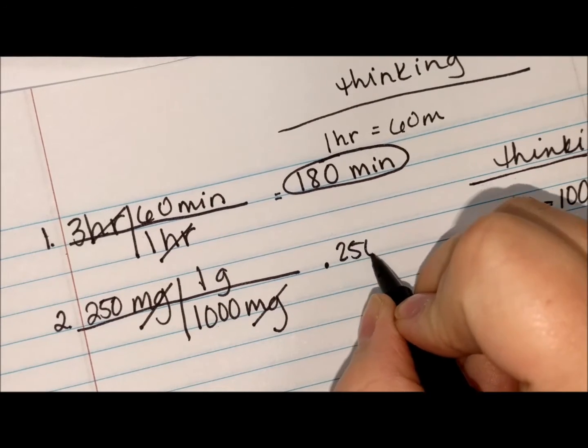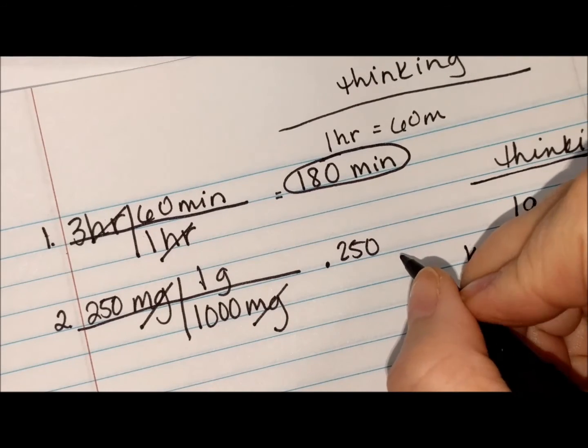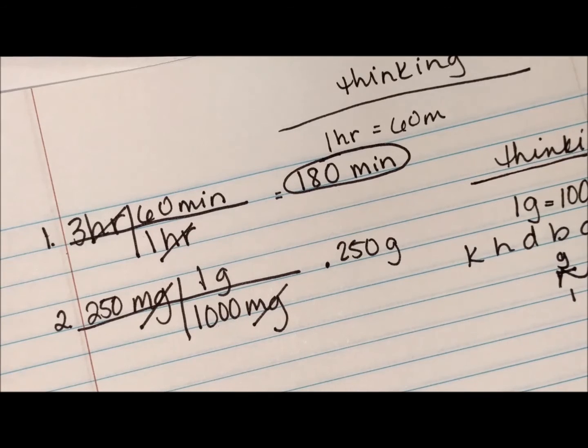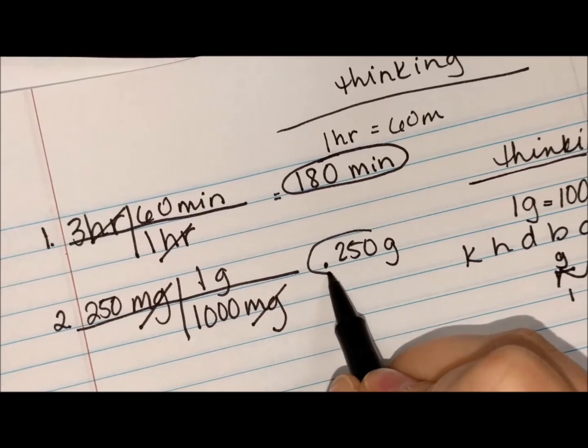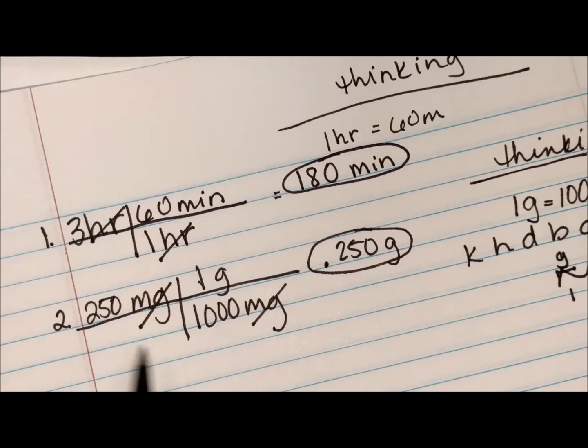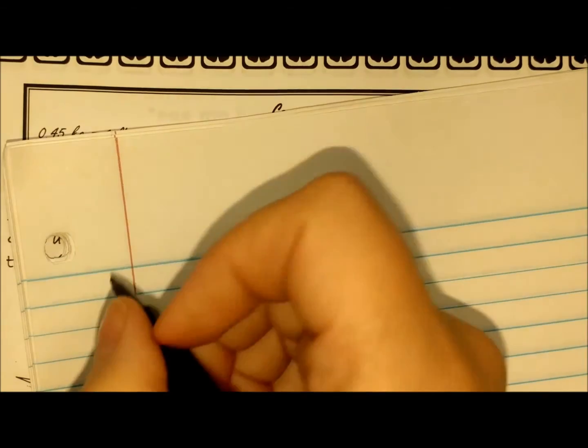So if it's on top you're going to multiply, if it's on the bottom you're going to divide. I just did that math in my head: 250 divided by one thousand is 0.250 grams. Let's do number three. Number three says 0.035 milligrams, and I'm going to centigrams.